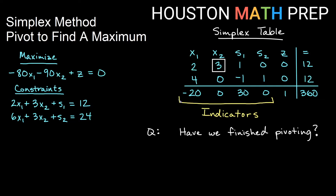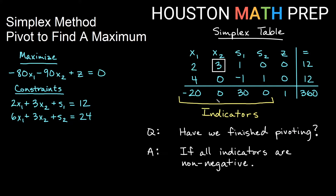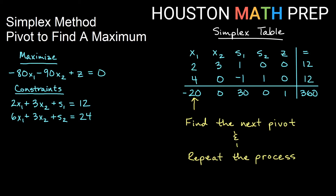Now we turn our attention to the indicators to determine if we are finished pivoting and can state the maximum. The indicators are all of the entries in the last row except for the final two entries — so the one and 360 are not included. We need all indicators to be non-negative to be done. Looking at negative 20, 0, 30, and 0, we still have a negative indicator, so we are not finished. We need to find another pivot and repeat the process.